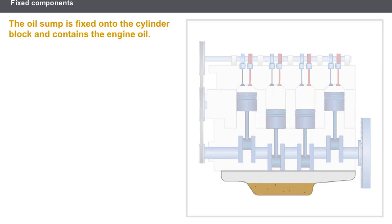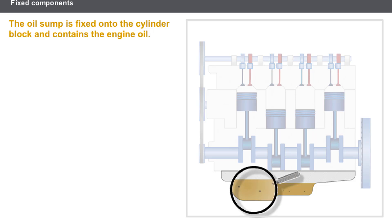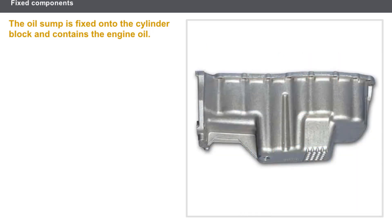The oil sump is fixed onto the cylinder block and contains the engine oil. It is sometimes equipped with fins which assist in cooling the engine oil. The oil sump is also equipped with a drainage plug which may or may not be magnetized. If magnetized, it retains the metal particles. The oil sump is made of steel or light alloy.